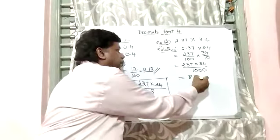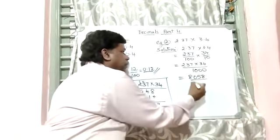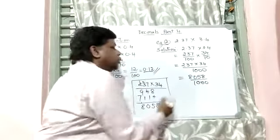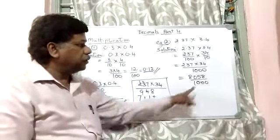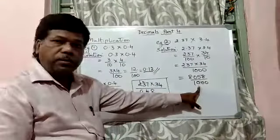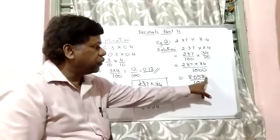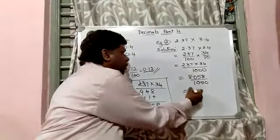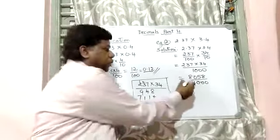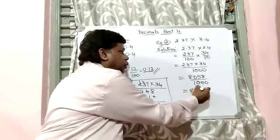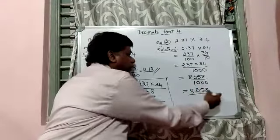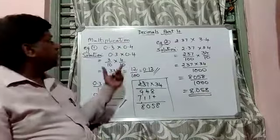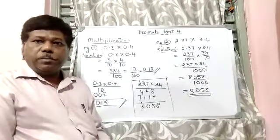So 8,058 divided by 1,000. So where should I put the point now? There are three zeros. So after 1, 2, 3 points, it should be in between 8 and 0. So 8.058. So this is how you multiply bigger numbers.